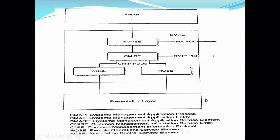Now let's see the figure. This is SMAP — System Management Application Process. SMAE — System Management Application Entity. SMASE — System Management Application Service Element. And CMISE — Common Management Information Service Entity. CMIP — Common Management Information Protocol. This is called ROSE — Remote Operation Service Element. And ACSE — Association Control Service Element. This is the presentation layer and the processes are connected as shown in the figure.